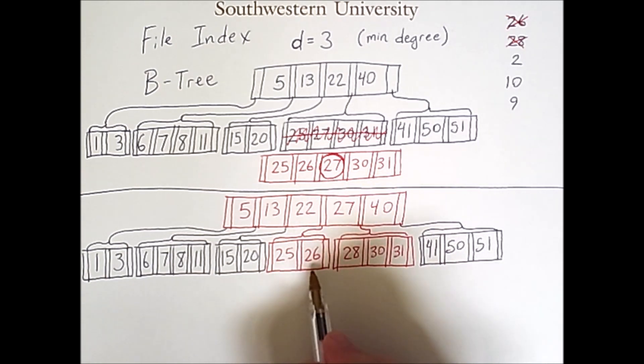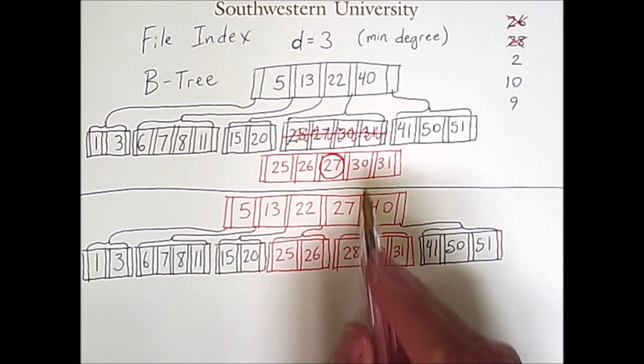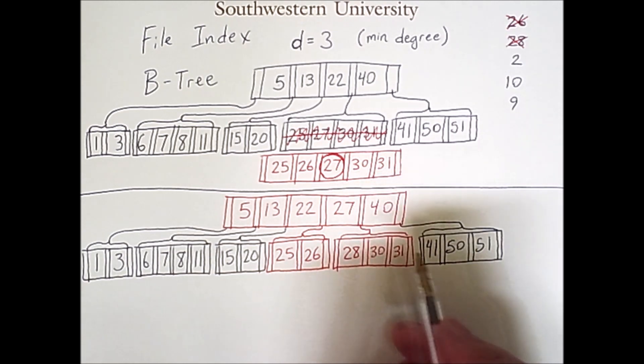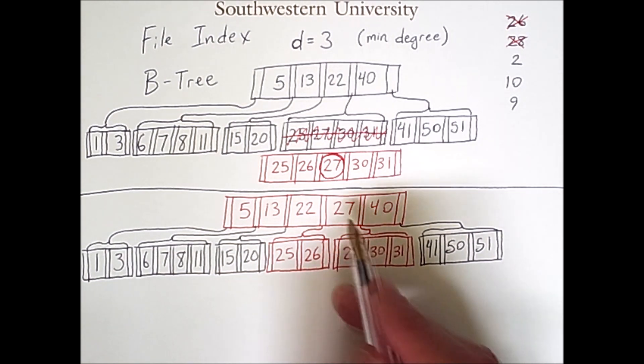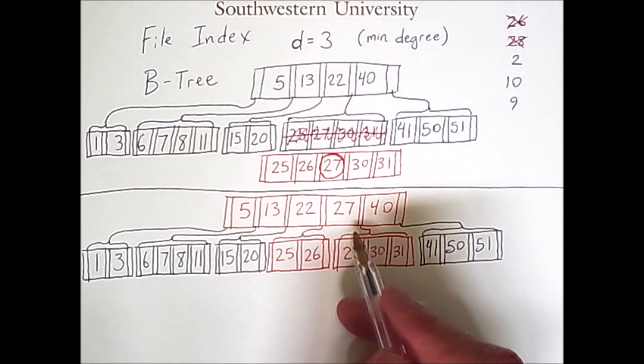On one side we have the 25 and the 26, and the other side initially had the 30 and the 31, but remember we're inserting the 28. And so the 28 went with the right node because it was greater than 27, this median value that was promoted. If it had been less, it would have gone on the other side.